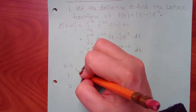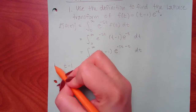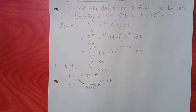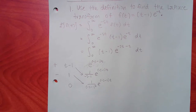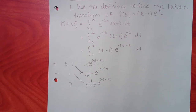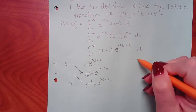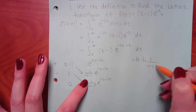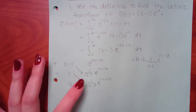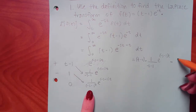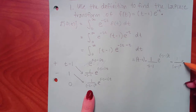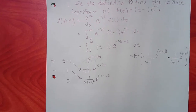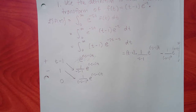Remember your signs in the tabular method — go downward diagonal. The first term is positive, but the second you have to change the sign. I don't need to go further because 0 will make everything 0. So this integral becomes (t minus 1) times 1 over negative (s plus 1) times e to the negative (s plus 1)t, minus 1 over (s plus 1) squared times e to the negative (s plus 1)t, evaluated from 0 to infinity.